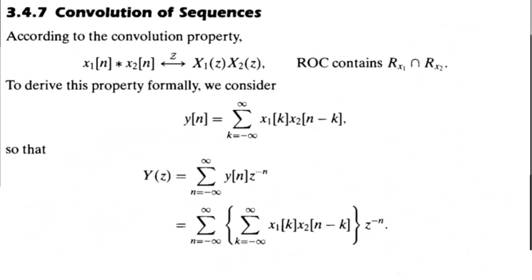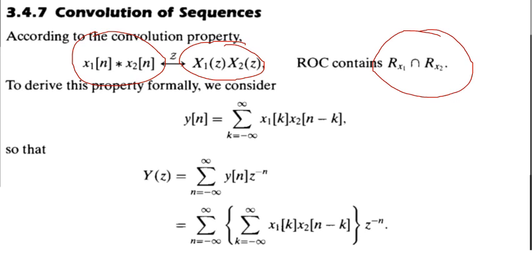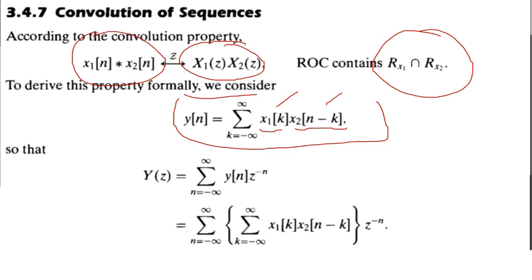Now for the convolution property: according to this property, two signals convolved in time will be multiplied in the Z-domain, and the region of convergence will be the intersection of the two sequences' ROCs. For example, one sequence is x₁(k) and the other is x₂(n−k) — this is the standard convolution formula. If I take the Z-transform of y(n) equals the summation of x₁(k)·x₂(n−k), substituting the value of y(n)...